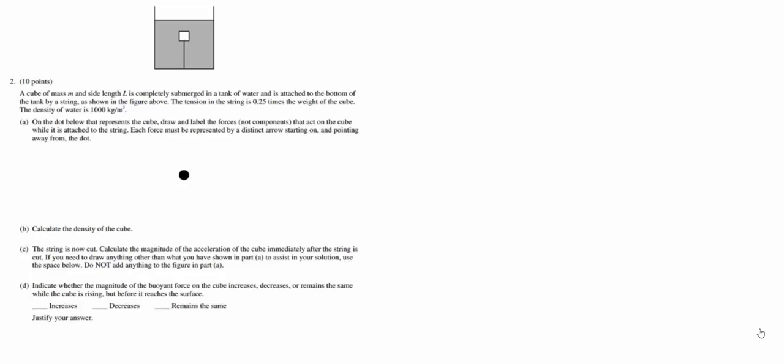Alright, this is problem number two from the 2014 AP Physics B exam. This is primarily a fluid physics problem. We've got a cube of mass M with a side length L, completely submerged in a tank of water attached to the bottom by a string. The tension of the string is 0.25 times the weight of the cube, and we know the density of the water is 1,000 kilograms per cubic meter.